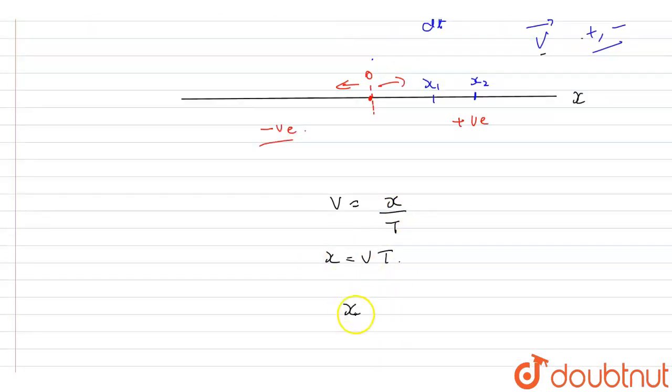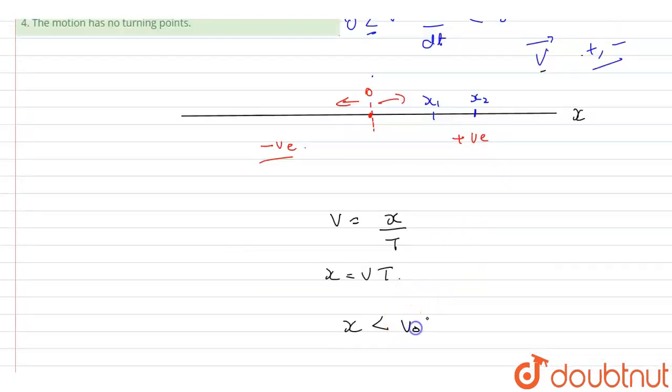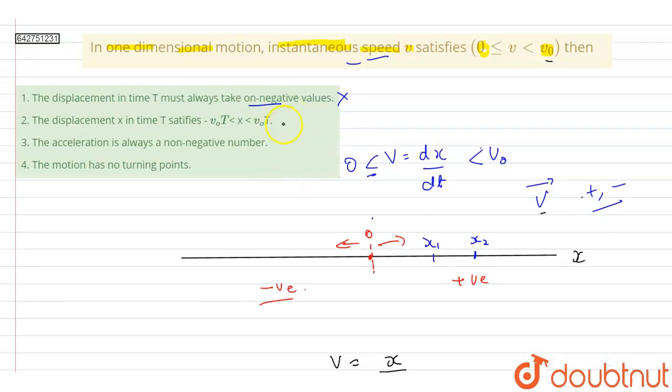So from this we can say that displacement cannot be greater than v0t and it cannot be less than minus of v0t if it goes to the negative x axis. So therefore this option is correct.